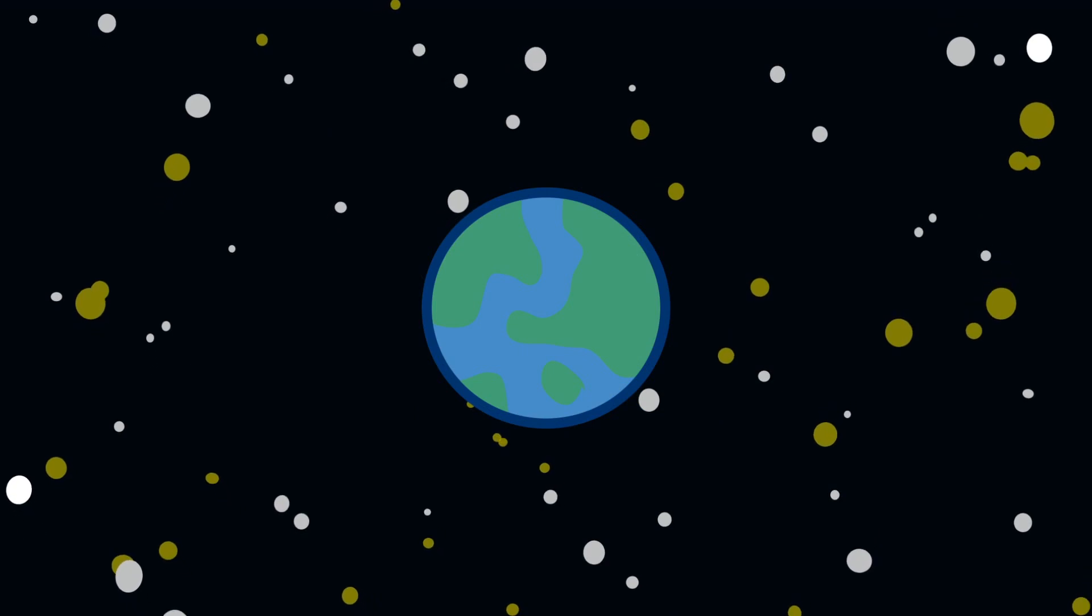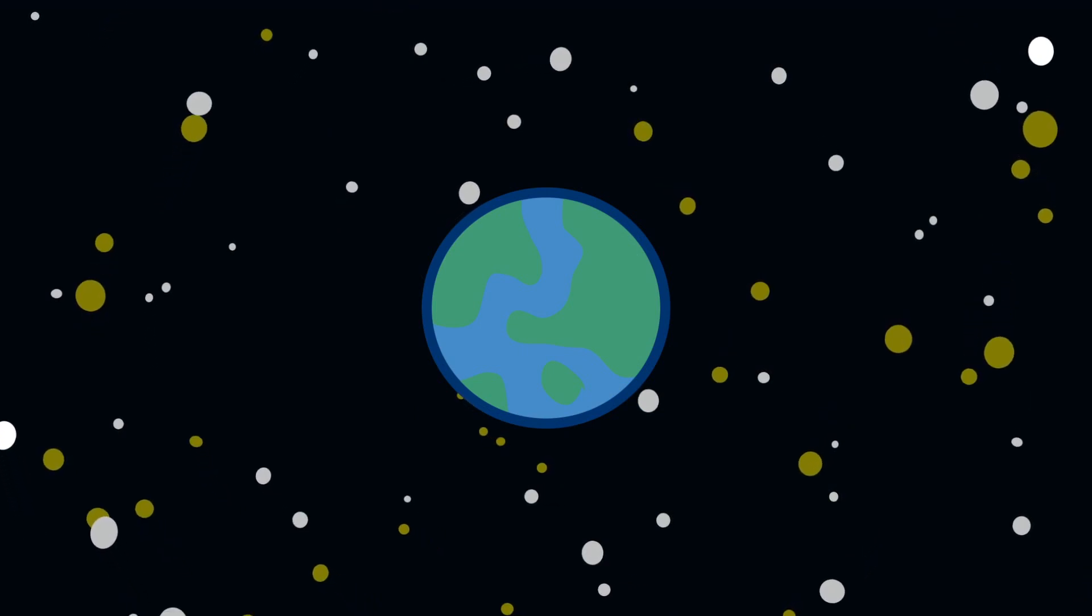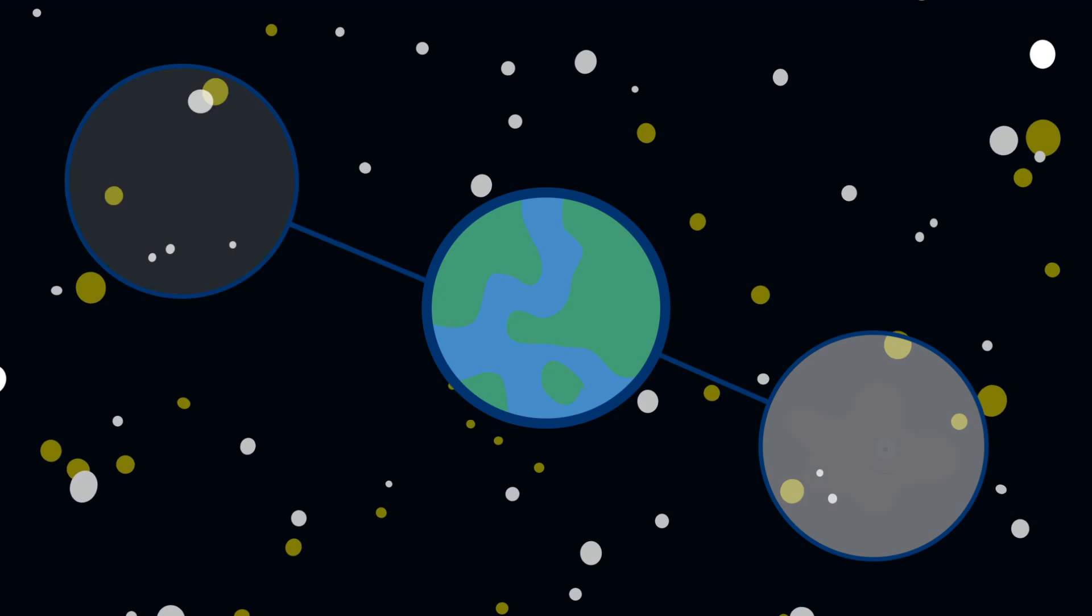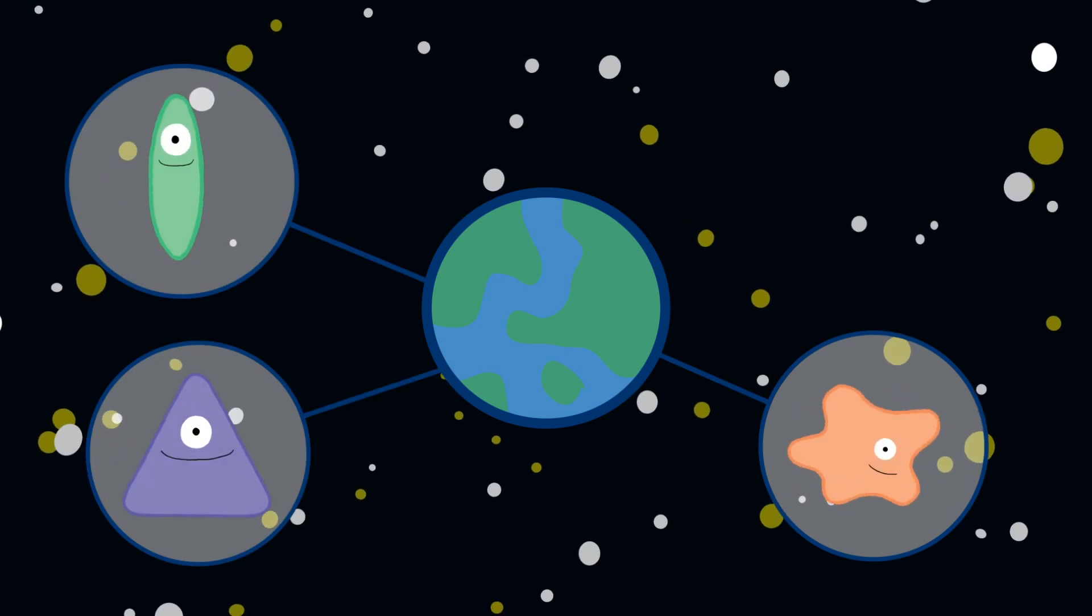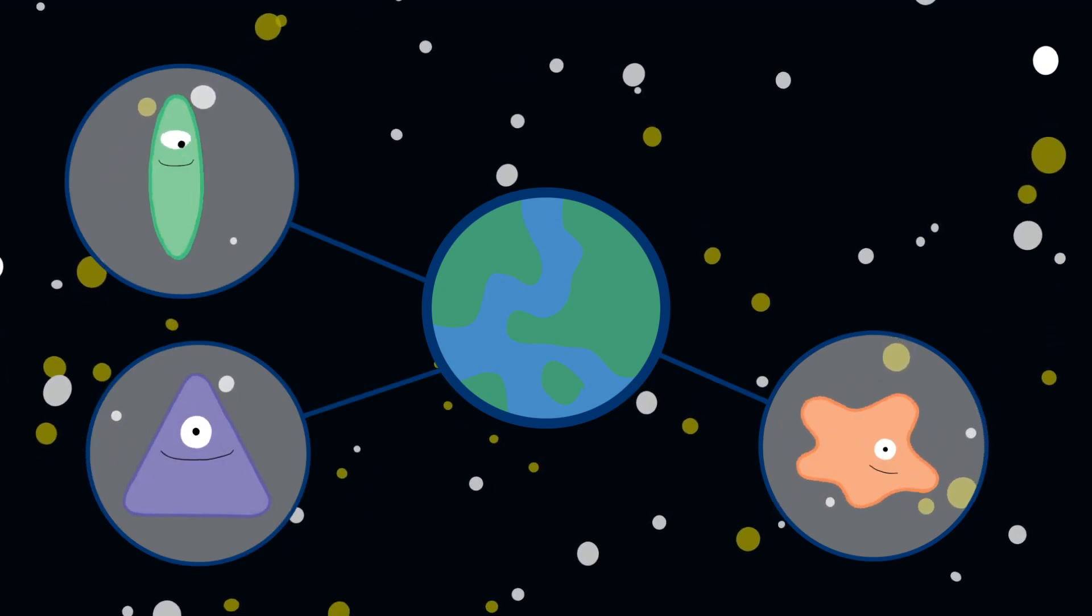We think that around two billion years ago, the only living organisms on Earth were prokaryotes, single-celled organisms lacking membrane-bound organelles.